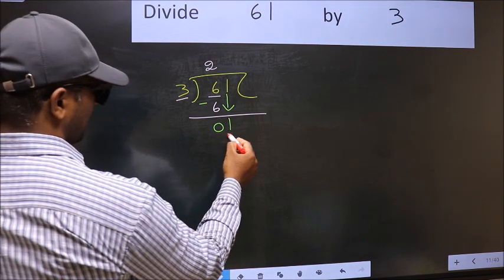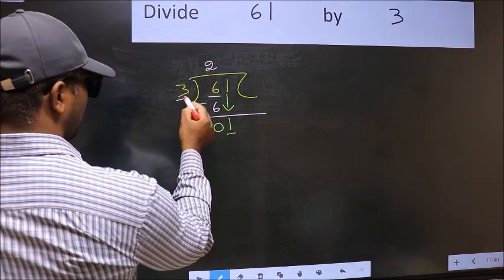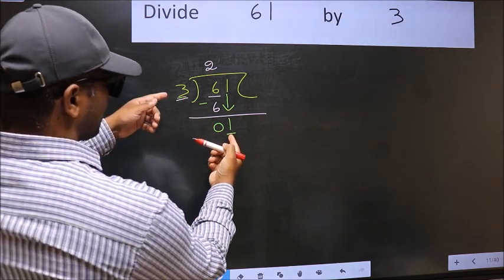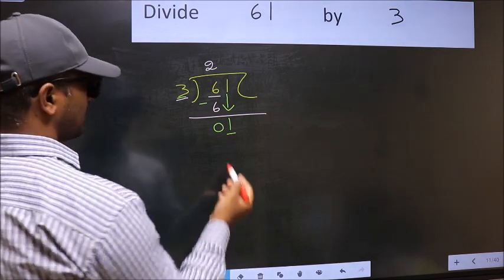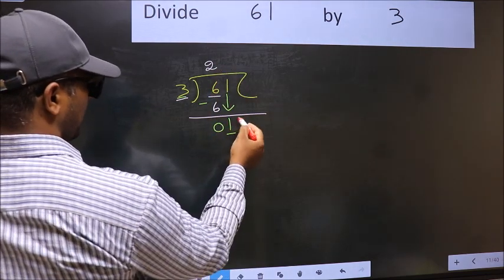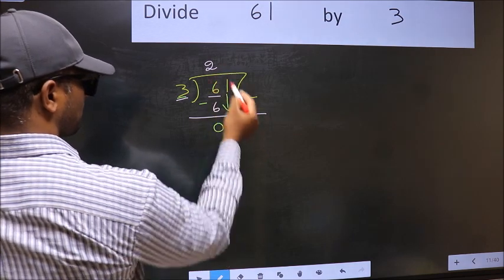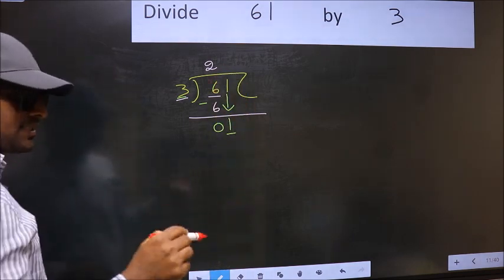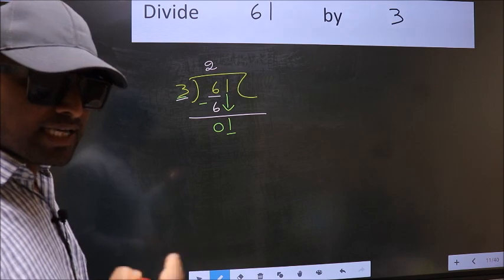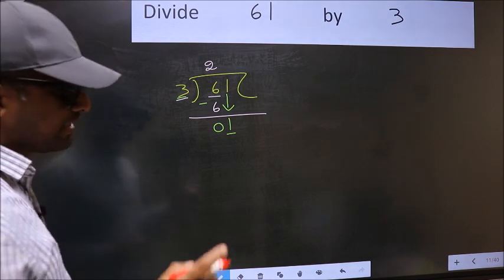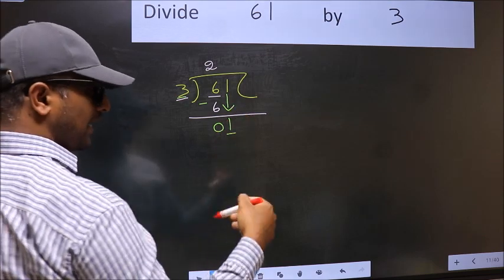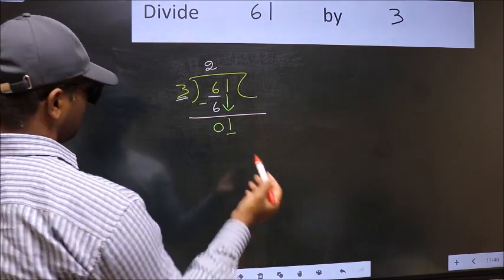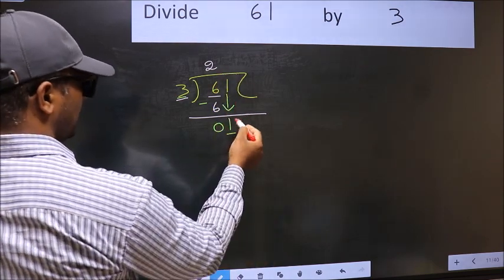And the mistake is this: Here we have 1 and here 3. 1 is smaller than 3. So what many do is they directly put a dot and take 0, which is wrong. Why is it wrong? Because just now you brought this number down, and in the same step you want to put a dot and take 0.